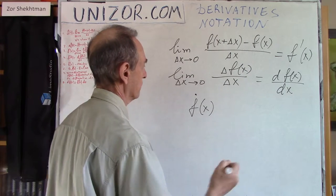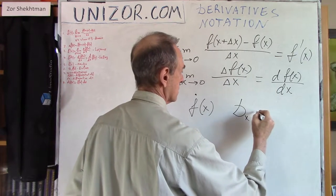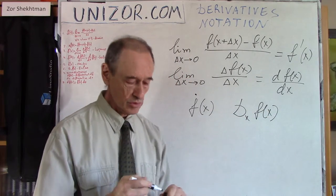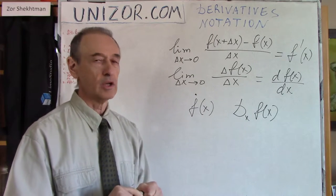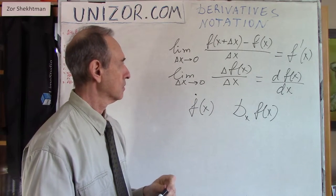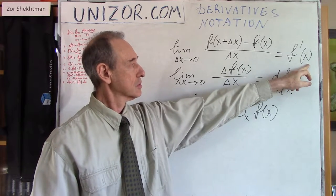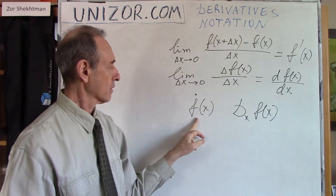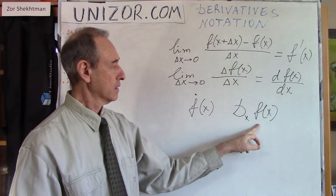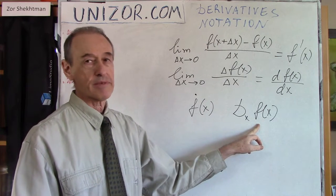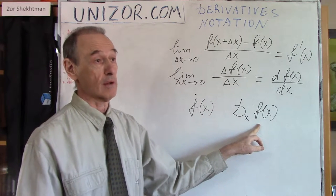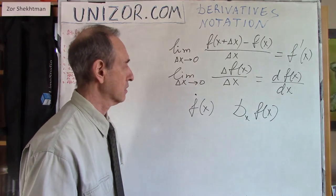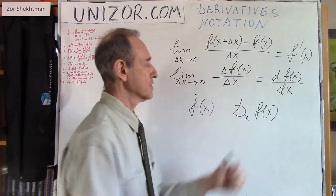Another notation was used by Euler. So: Lagrange from Italy, Leibniz from Germany, Newton from England, and Euler — who was actually a Swiss mathematician but lived almost his entire life in Russia and essentially created the Russian school of mathematics. Most likely we will be using one of these two notations — Lagrange's or Leibniz's.